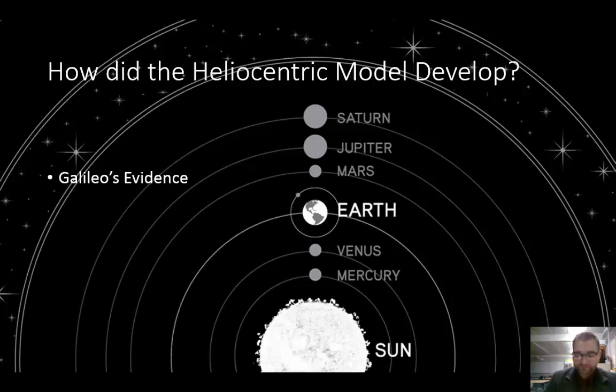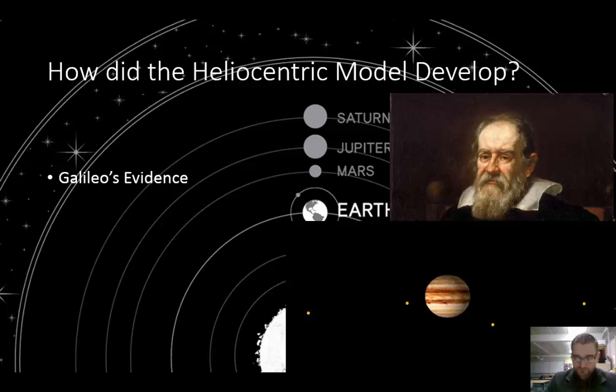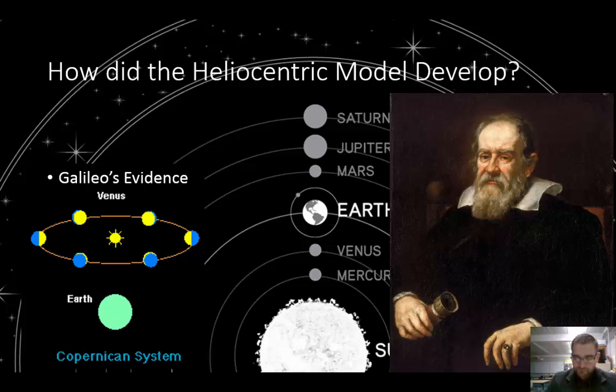Along came Galileo. In the 1500s and early 1600s, most people still believed in the geocentric model. However, evidence collected by the Italian scientist Galileo gradually convinced others that the heliocentric model was correct. In 1610, Galileo used a telescope to discover four moons around Jupiter. These moons proved that not everything in the sky revolved around Earth. Galileo also discovered that Venus goes through a series of phases similar to the moon's. But Venus would not have a full set of phases if both it and the sun circled around Earth. Therefore, Galileo reasoned the heliocentric model must be correct.